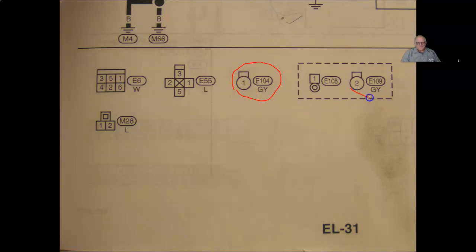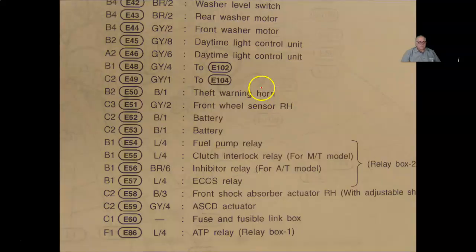I'm going to go back to the component locator, and on the component locator, I'm going to find the engine wiring harness, and on the engine wiring harness, I can see the E42, E43, E44, and I come to my E49.